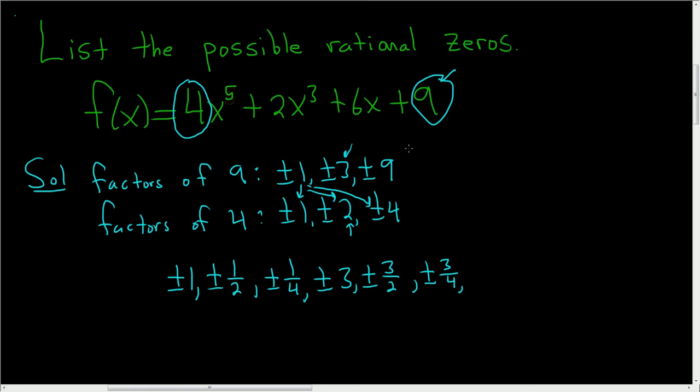Finally, you look at the 9, and you do the same thing with the 9. 9 over 1, 9 over 2, and 9 over 4. So 9 over 1 is 9. 9 over 2 is 9 over 2. And 9 over 4 is just 9 over 4.